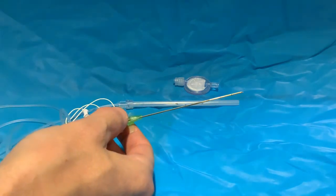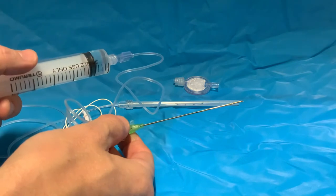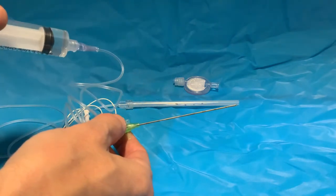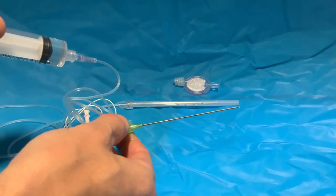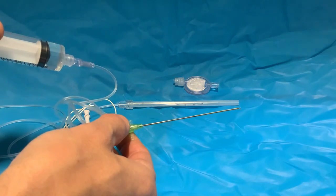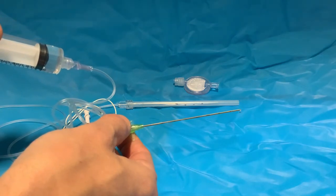Before you start, you should flush with saline or local anesthetic to put local anesthetic along and inside the cannula. It will help it to be more echogenic when you start.